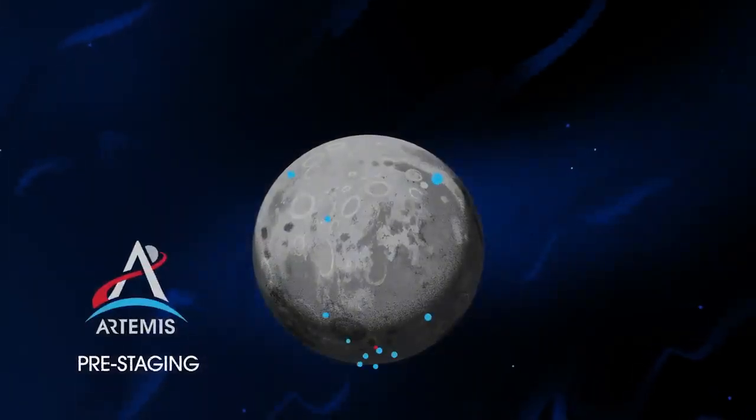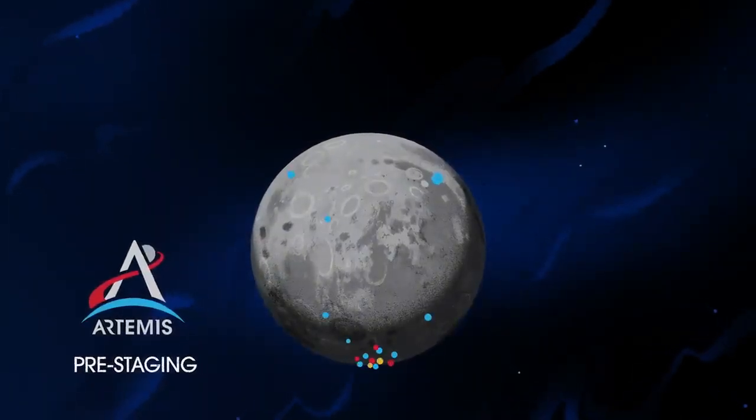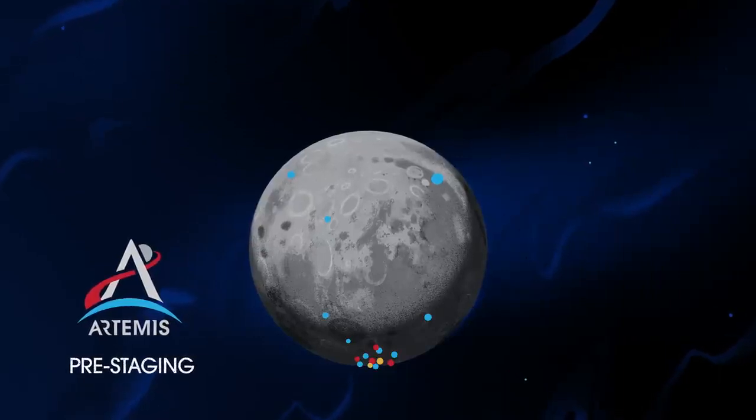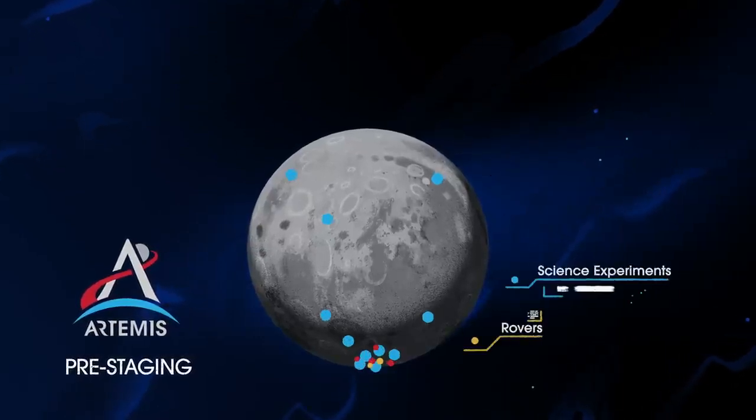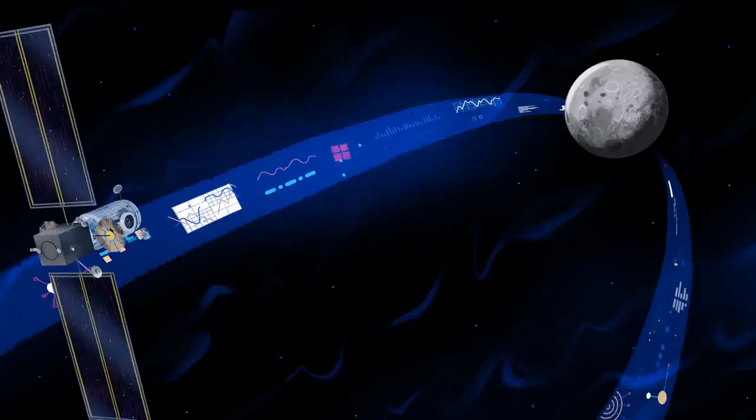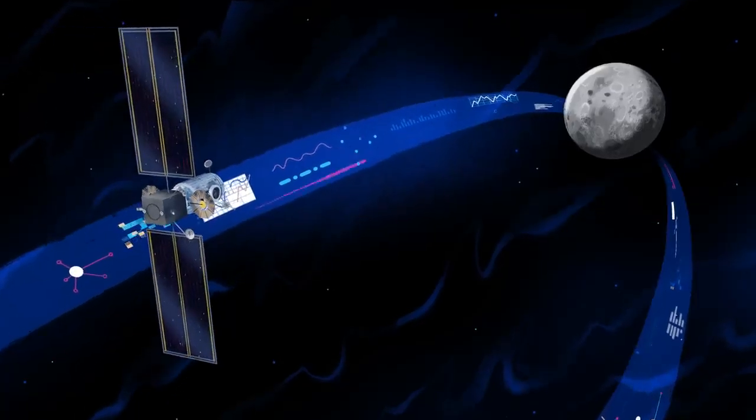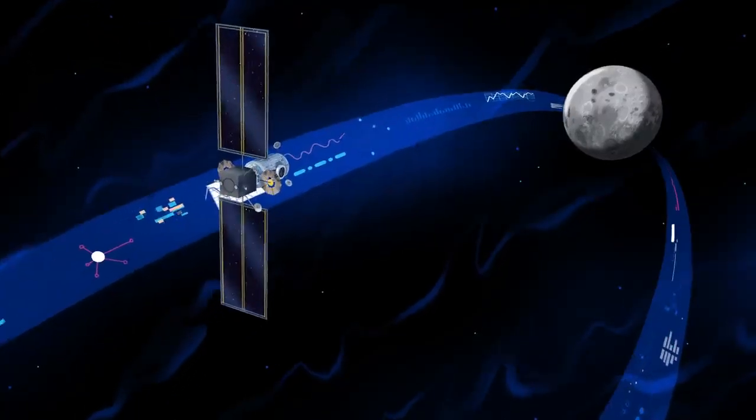Everything needed for lunar missions will be positioned in advance by commercial and international partners. This includes rovers, science experiments, and human-rated systems on the surface. But it also includes a dedicated lunar station in orbit around the Moon called Gateway.